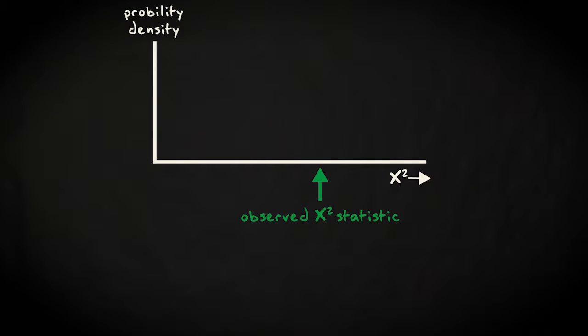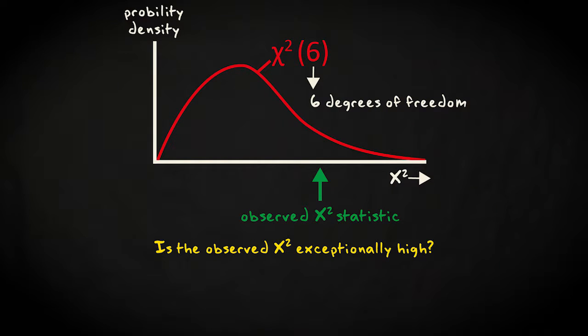You can interpret a value of the chi-squared statistic with an expected value by using the chi-squared distribution with the appropriate choice for the degrees of freedom parameter. It answers the question whether the particular value for the statistic you found is exceptional.